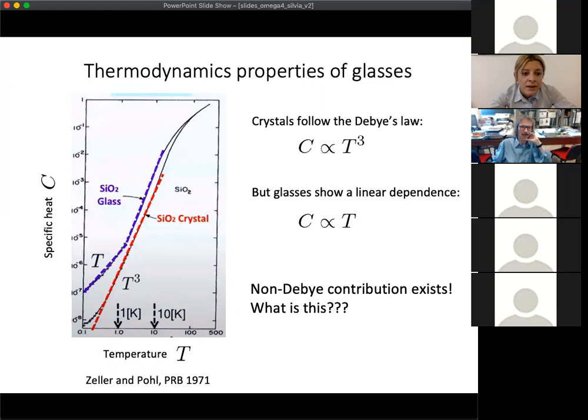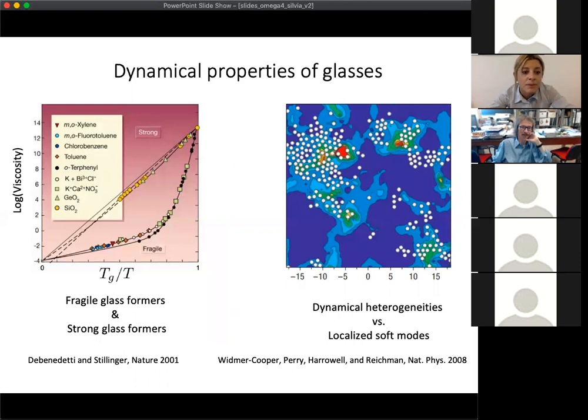Instead we find that the specific heat has a linear dependence at low temperature. This anomalous behavior is not yet completely understood, in the sense that there exists a non-Debye contribution that somehow appears in this quantity.